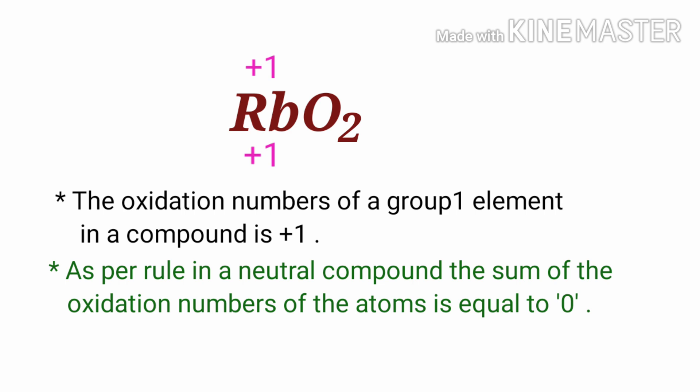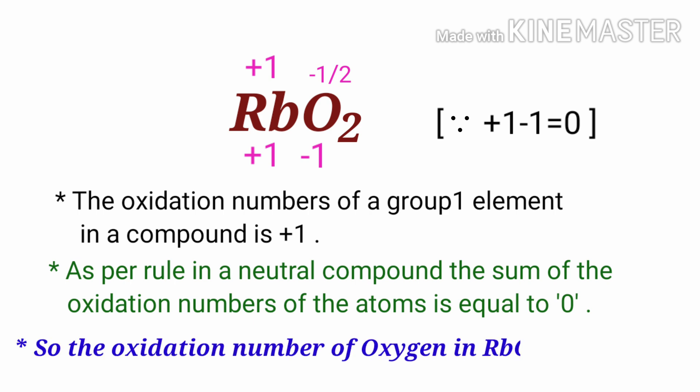Therefore, the total contribution under O₂ must be minus 1. In the O₂ unit, there are two oxygen atoms present; therefore, the oxidation number of each oxygen atom is minus 1/2. So the oxidation number of oxygen in rubidium superoxide is minus 1/2.